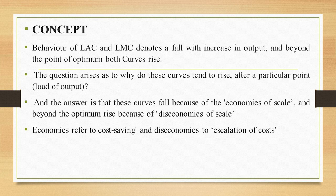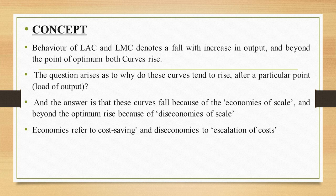Today's lecture covers the behavior of the long run average cost curve (LAC) and long run marginal cost curve (LMC). They denote a fall with increase in output — as output increases, the LAC and LMC fall down. Beyond the point of optimum, both curves rise, because once the economies of scale have been exhausted the curves start rising and diseconomies start taking place.